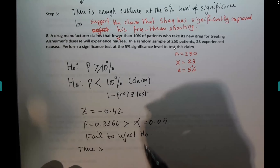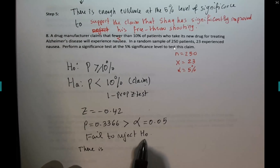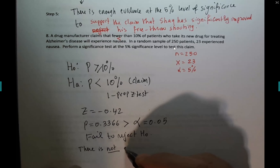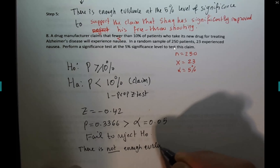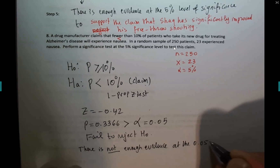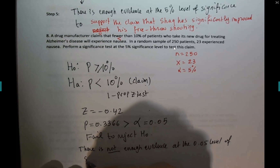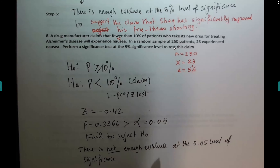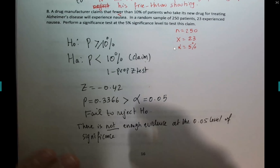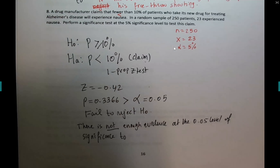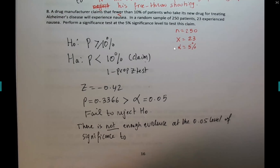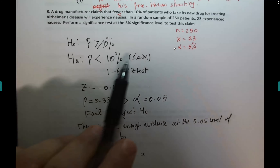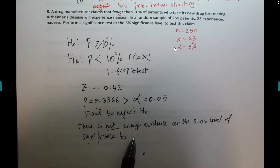Since we fail to reject H0, we start with: there is not enough evidence. At the 0.05 level of significance. With repetition you should be able to memorize this. Now the big decision — if you put the wrong word here you get zero, because it gives a totally different meaning. The claim is in HA. What's the word — 'support' or 'reject'? Support.